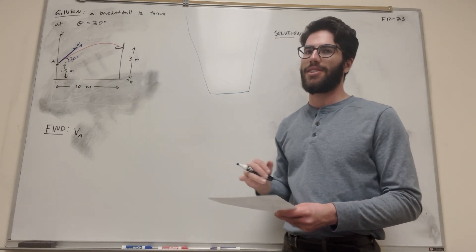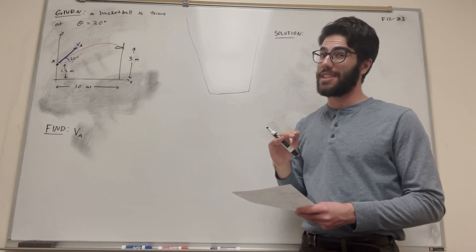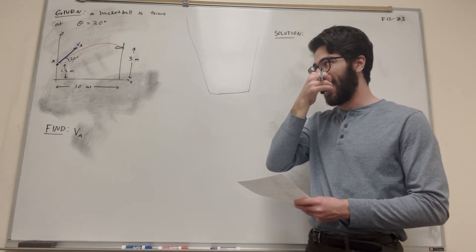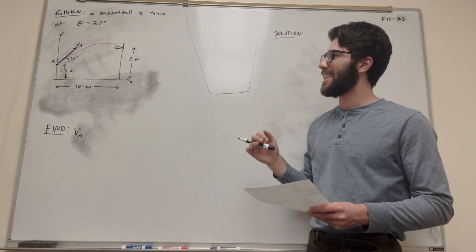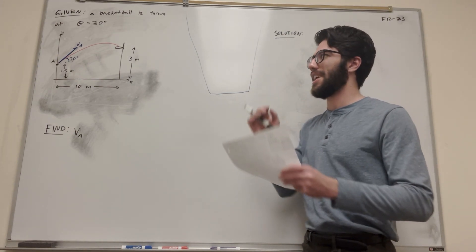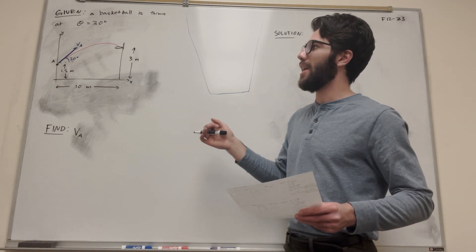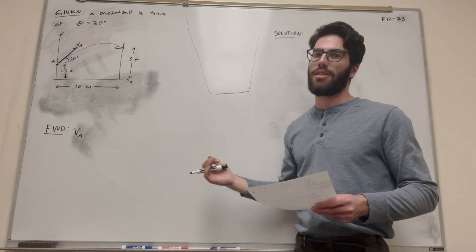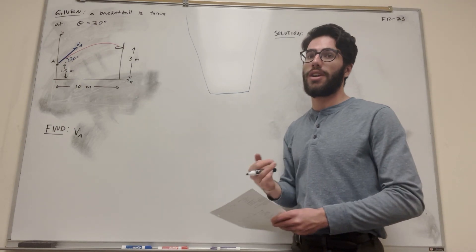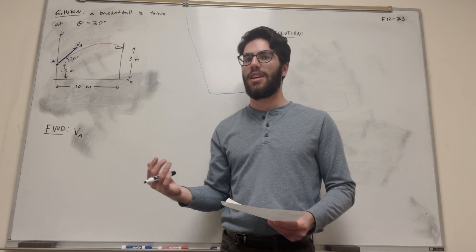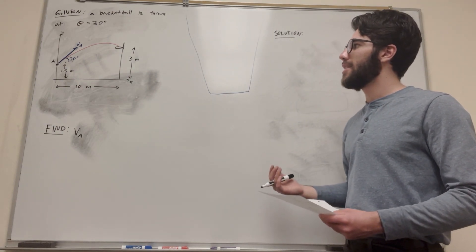Shooting a basketball at 30 degrees is a pretty steep angle — usually it's not quite that sharp of a downward angle. But anyway, we need to find out how hard we need to throw the basketball, or basically what initial velocity we need to throw the ball to do that.